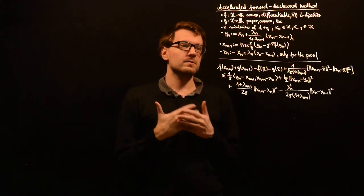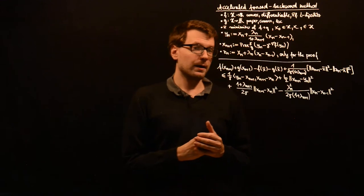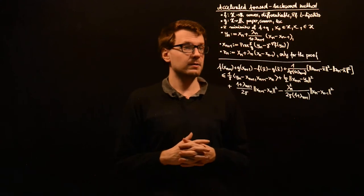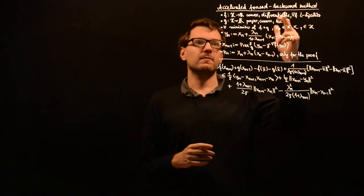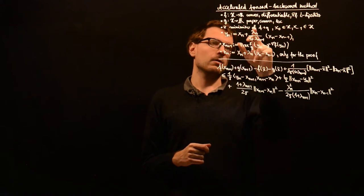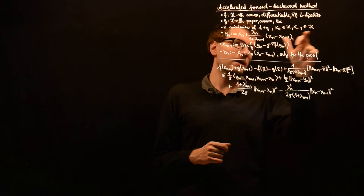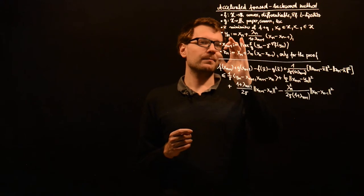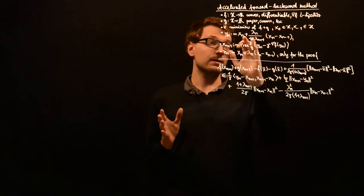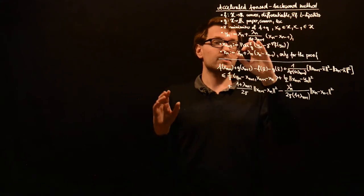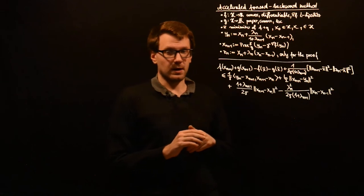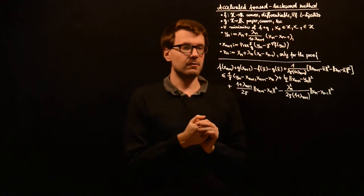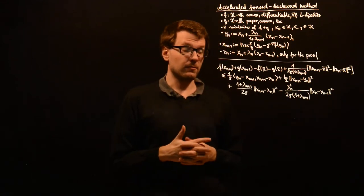Let's continue our calculations from the last video. I collected all the statements and assumptions we made previously. We still have our functions f and g, a minimizer x̄ of f plus g, some starting points, and our iteration given by γₙ as xₙ plus some factor times the progress made in the last step. It turns out this is the right choice to accelerate the convergence of the forward-backward method.